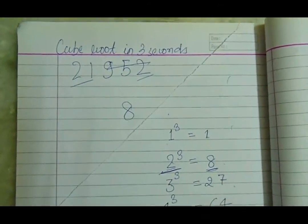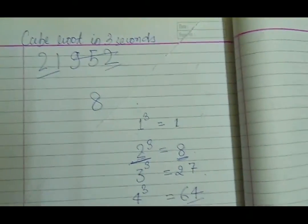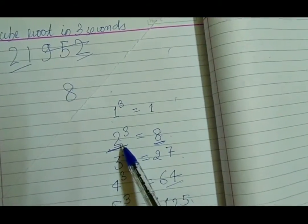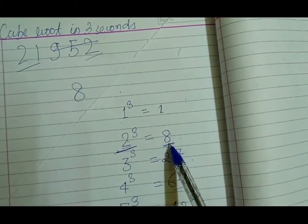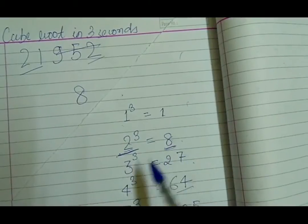Now find a cube, find a number whose cube is less than 21. Now we find a number 2 whose cube is 8, which is less than 21.